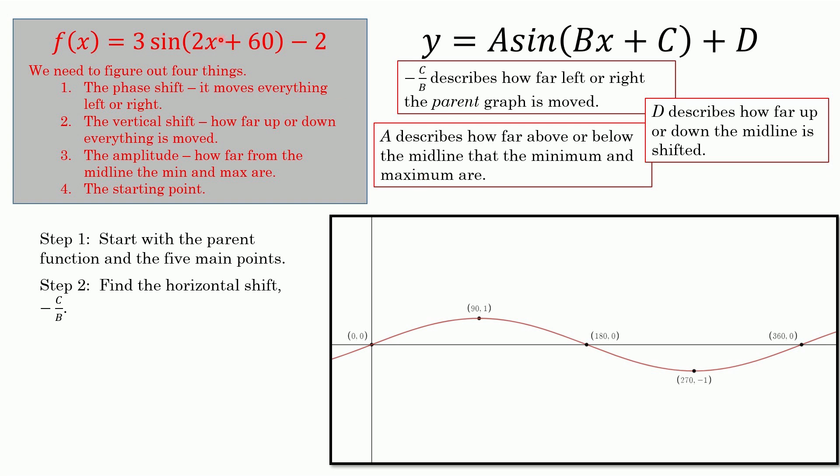The next step is horizontal shift, that's negative C over B. So, negative 60 over 2, it's the opposite sign, don't forget that. Since it's 60 over 2, negative 60 over 2, that's negative 30. So the whole thing gets moved left 30 degrees. We'll tuck that away, keep that for future reference.